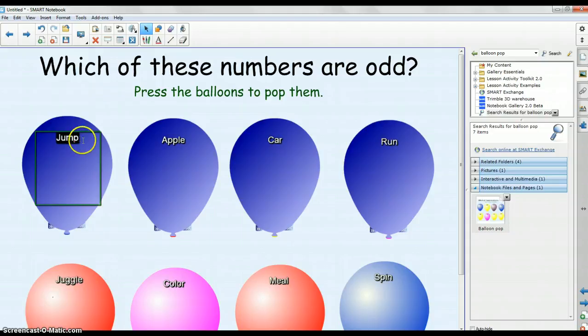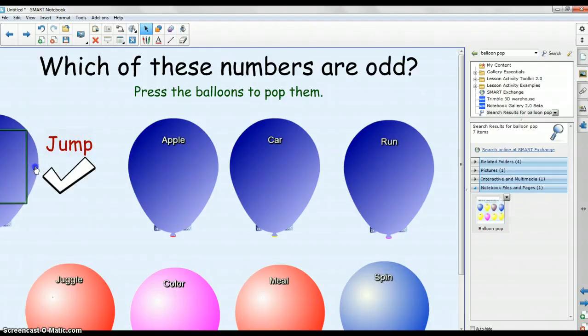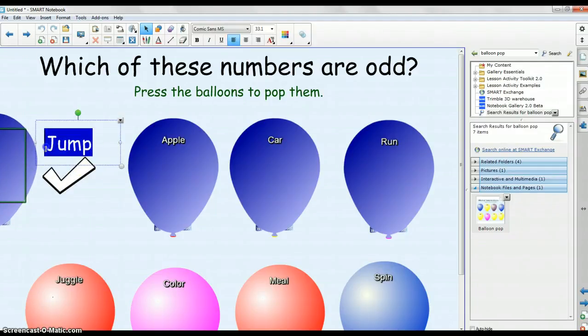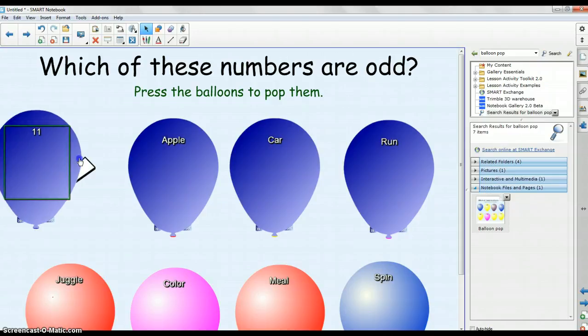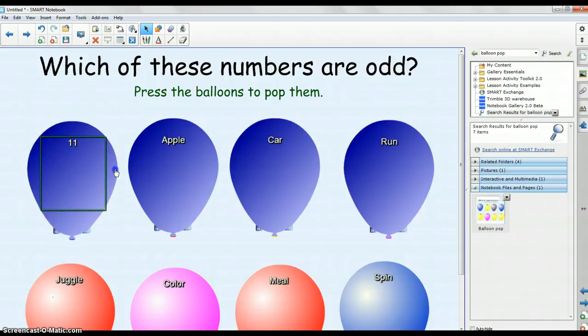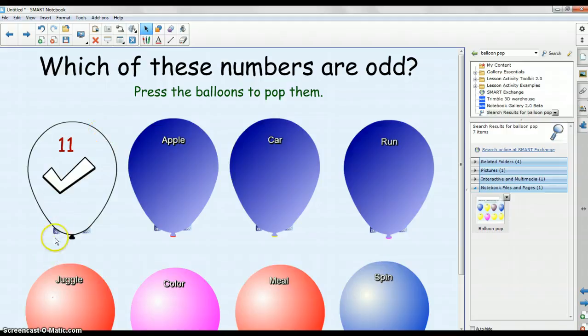So what I'm going to do is I'm going to double click on my word, and I'm going to change jump to the number 11. Now, as far as revealing the answers, the answers are actually behind the balloon. So what you'll have to do is move the balloon out of the way for a second, and we're going to change jump here to the number 11, and move it over here, and move it back. And if I click again on my double arrows, now I'm back. We can click, and again, students can see that the number 11 is odd.